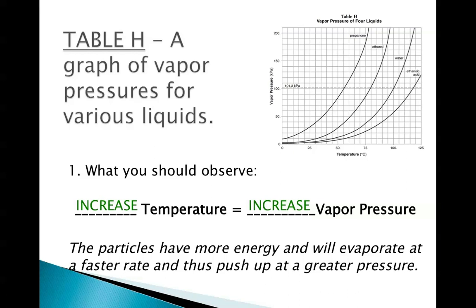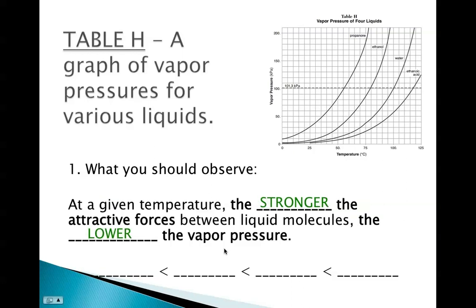Moving on to table H, this is a graph of vapor pressures for four different liquids. Something that you should be able to observe with this graph, the higher the temperature, the higher the vapor pressure. If I focus on water, at 50 degrees, I might have a vapor pressure of about 12 kilopascals. At 100 degrees Celsius, the vapor pressure at that point would be 101.3 kilopascals. So increased temperature, increased vapor pressure. This is because the particles have more energy, so they'll be evaporating at a faster rate and thus pushing up at a greater pressure. Another thing you should observe is related to IMFs. At a given temperature, the stronger the attractive forces between the liquid molecules, the lower the vapor pressure, because they're not able to escape to be a gas as quickly.